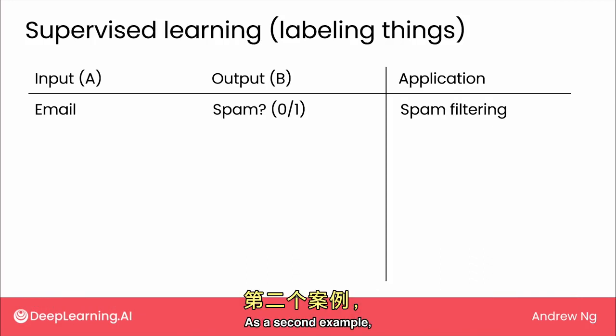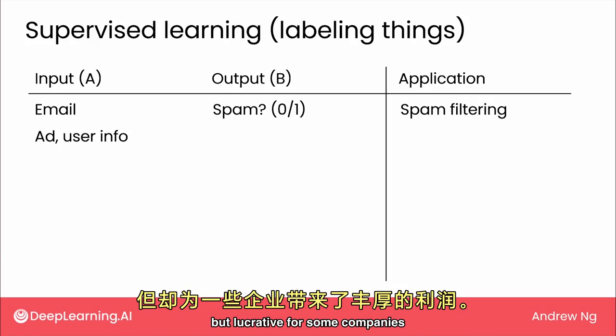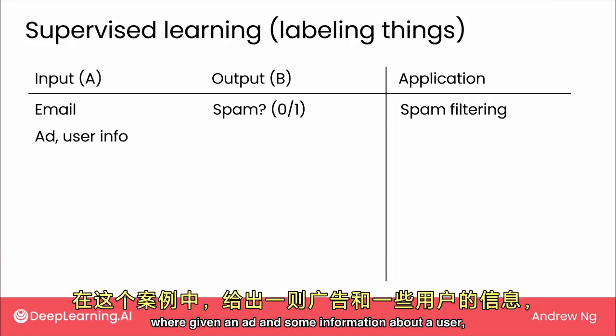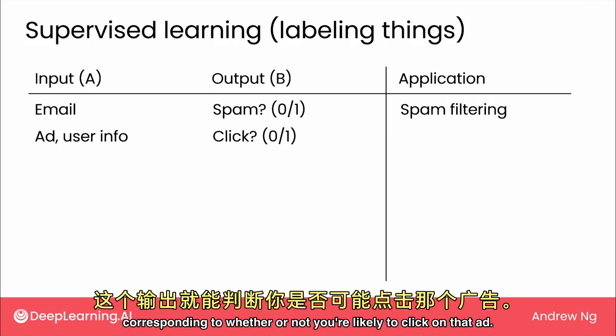As a second example, probably the most lucrative application — not the most inspiring, but lucrative for some companies — that I've ever worked on was online advertising, where given an ad and some information about a user, an AI system can generate an output B corresponding to whether or not you're likely to click on that ad.